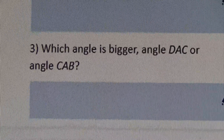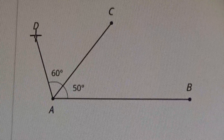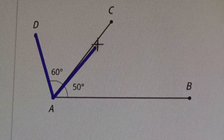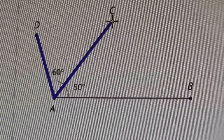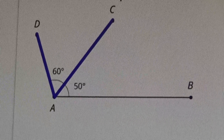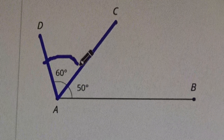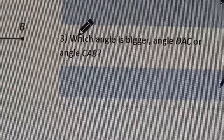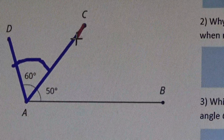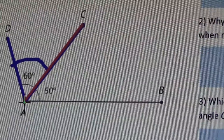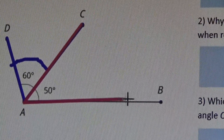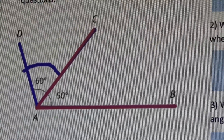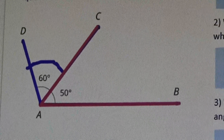Angle DAC — tracing from D to A to C — comparing that angle to angle CAB — tracing from C to A to B. Look at the numbers they give you and that will help you find the answer.